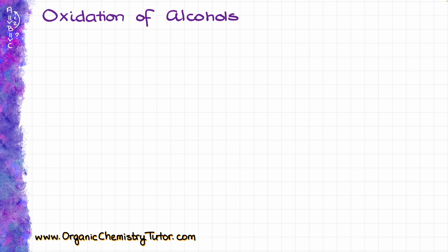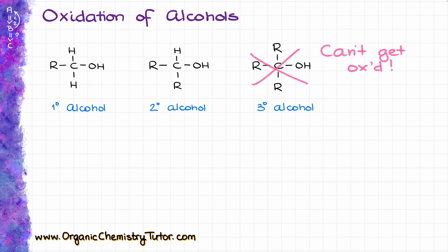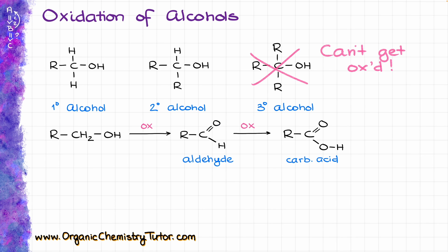Let's start by looking at probably the most common method, which is going to be the oxidation of alcohols. We classify alcohols as primary, secondary, and tertiary. However, only primary and secondary alcohols can undergo oxidation — tertiary alcohols cannot be oxidized any further. Primary alcohols can make either aldehydes or carboxylic acids, depending on the nature of the reagents you are using and the conditions.